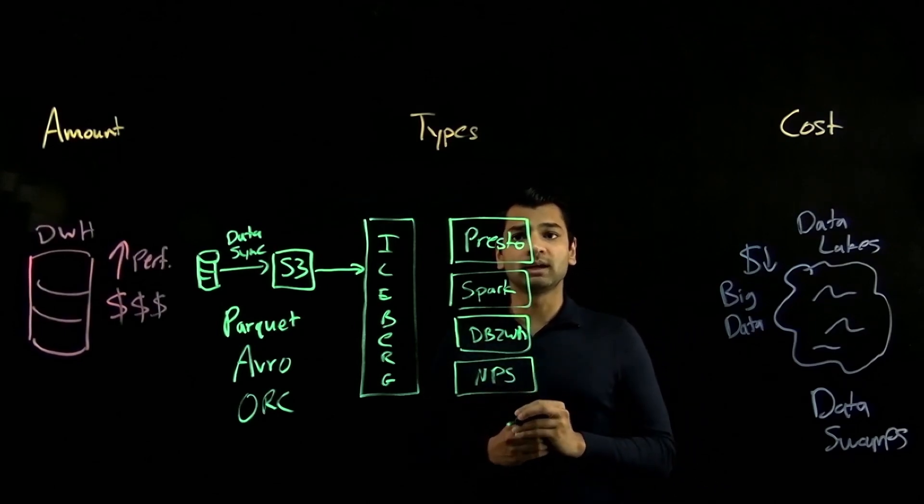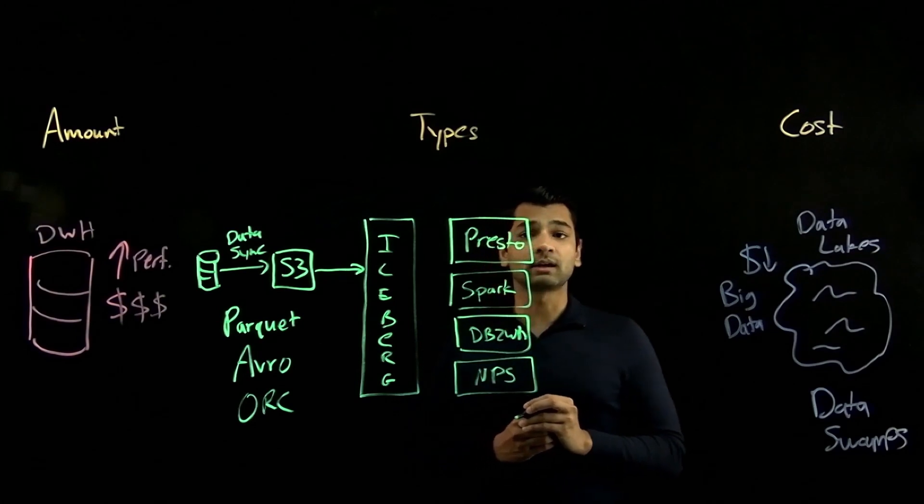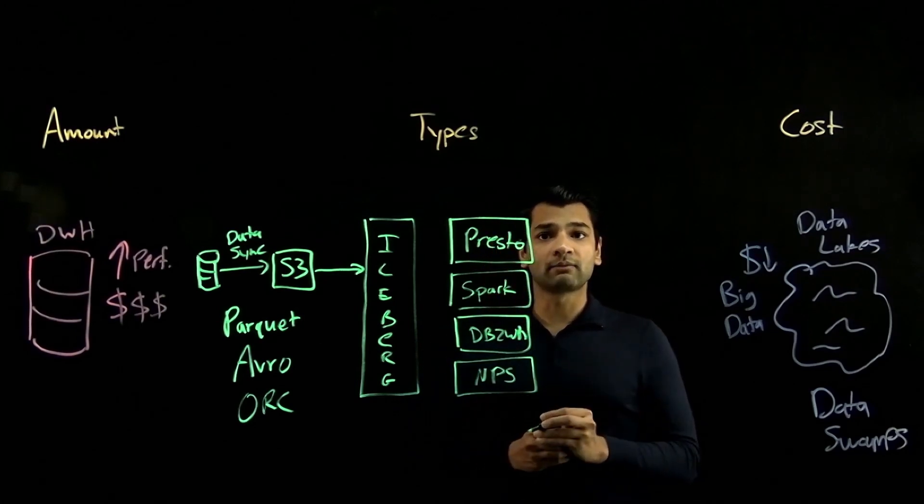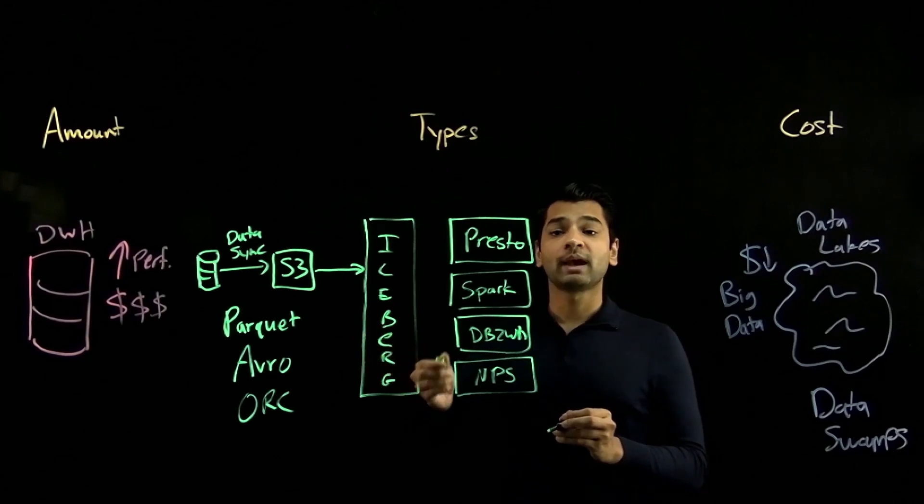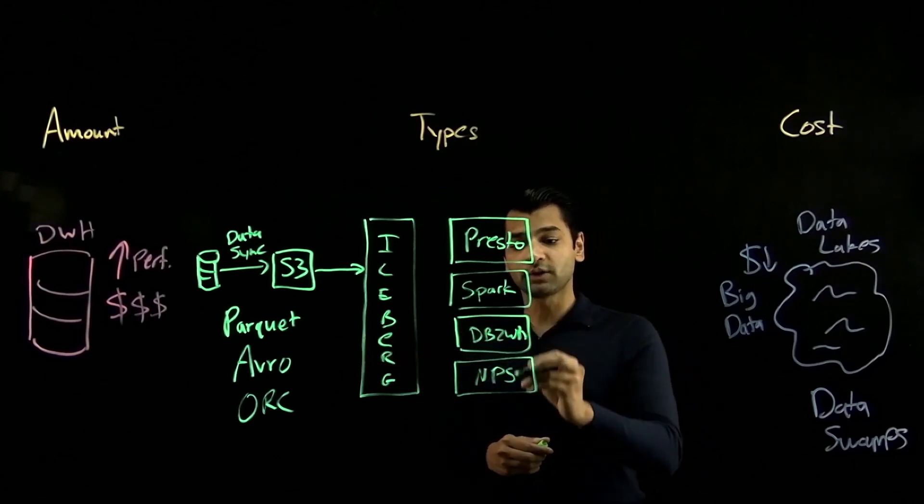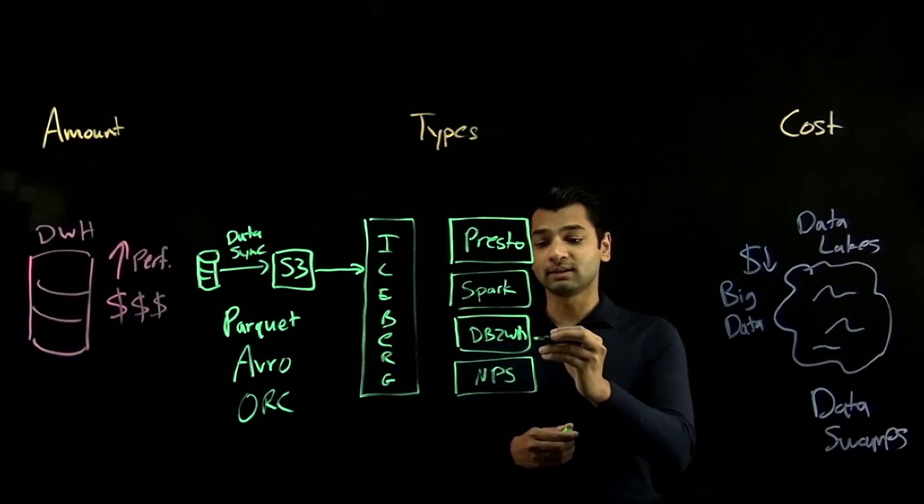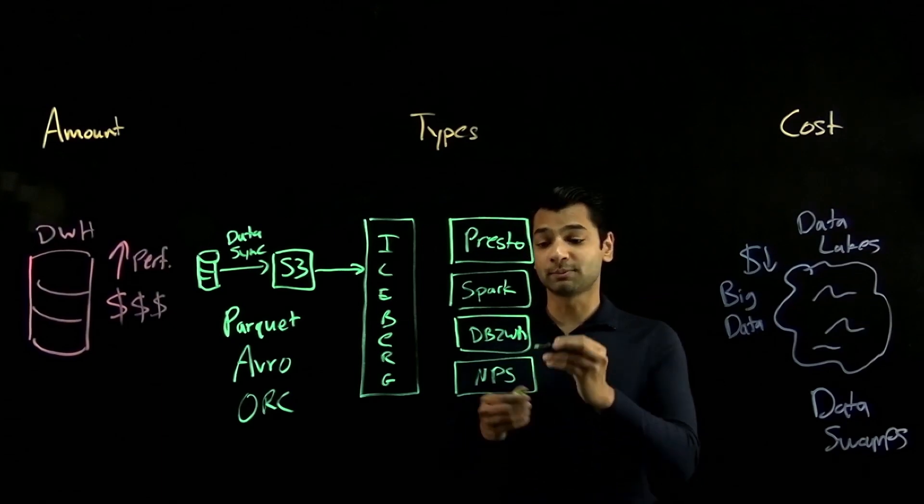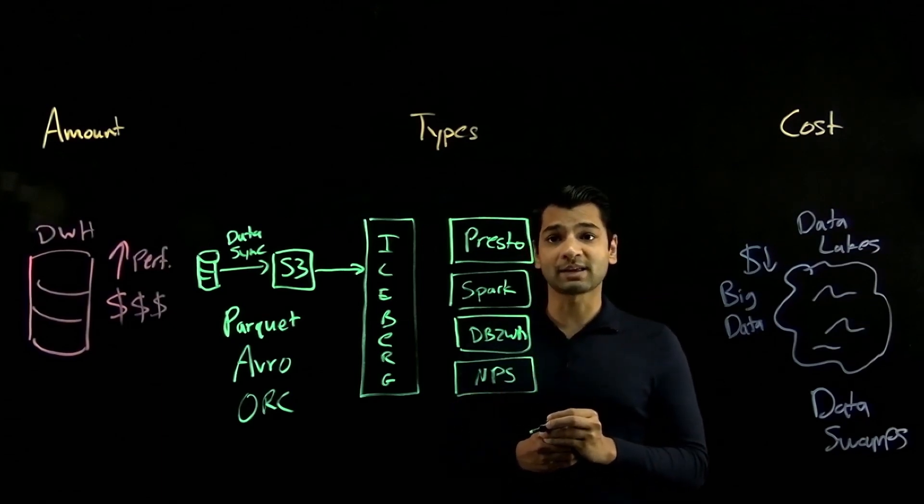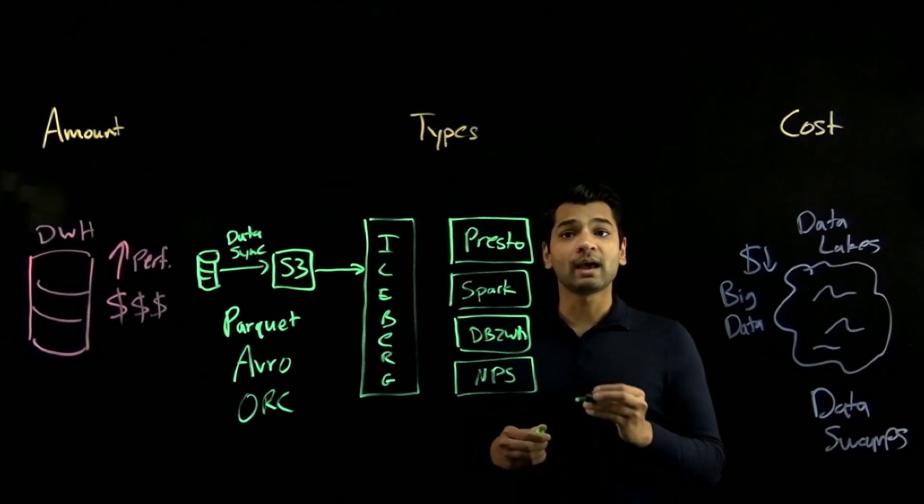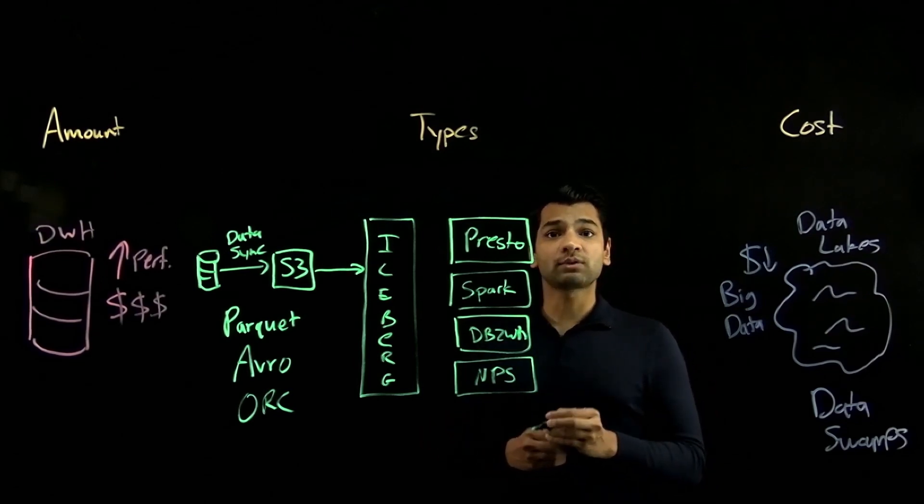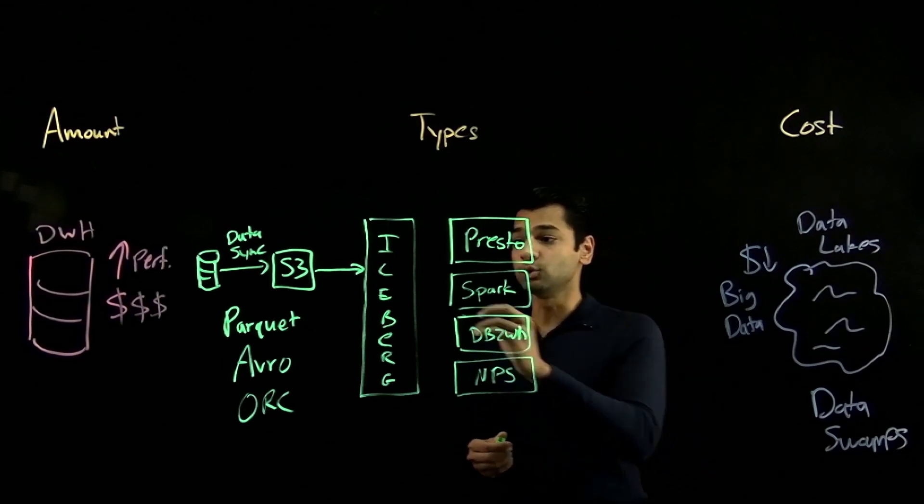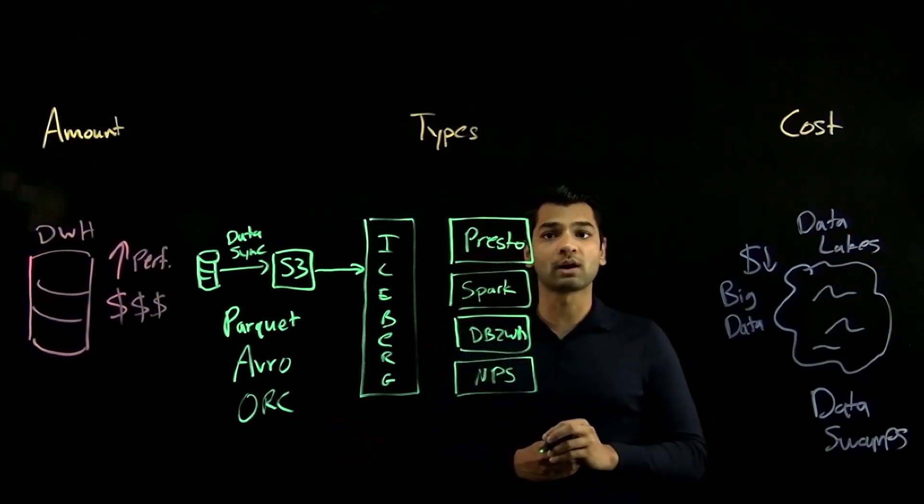Well, one example is our data scientists in our organization. They can leverage the Presto engine to access AWS data and combine it with data stored in other data warehouses like Netezza or DB2 Warehouse, which, by the way, are also available as SaaS offerings on AWS. And that enables them to produce new insights faster without the cost and complexity of duplicating or moving data across environments.